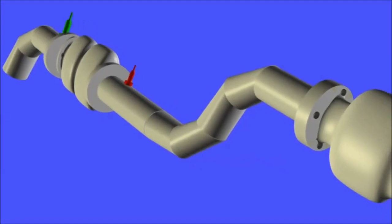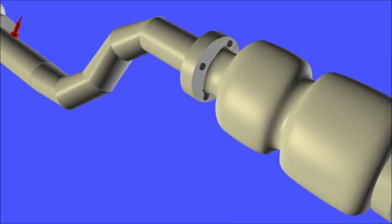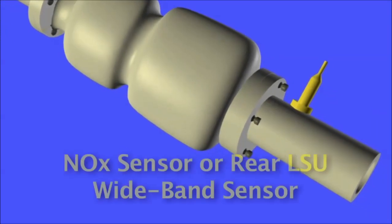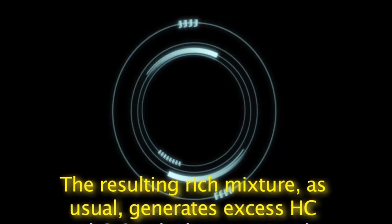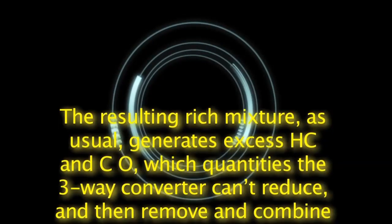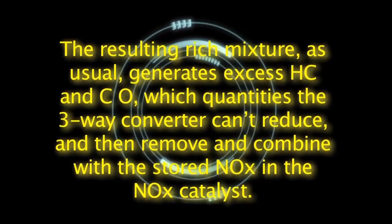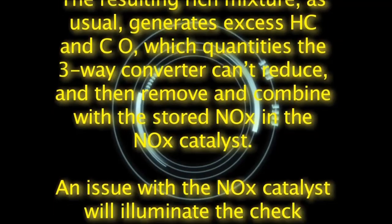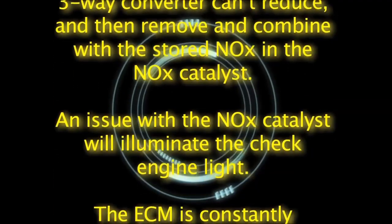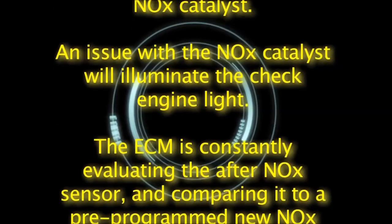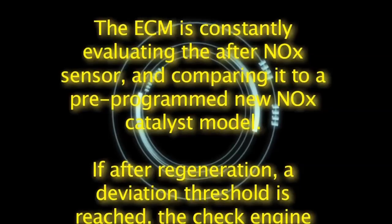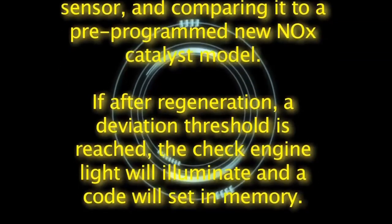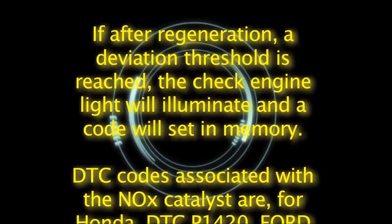The extra AFR sensor after the NOx catalyst is monitored by the ECM, which every so often — when informed that the NOx catalyst is saturated by the after NOx converter sensor — goes into a temporarily rich condition called lambda less than 1. The resulting rich mixture generates excess HC and CO, which the 3-way converter can't fully reduce, and these then combine with the stored NOx in the NOx catalyst. An issue with the NOx catalyst will illuminate the check engine light. If after regeneration a deviation threshold is reached, the check engine light will illuminate and a code will set in memory.